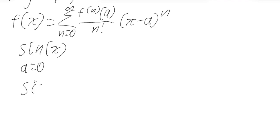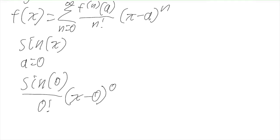So we'll start with the n equals zero term, and this term will be sine of zero over zero factorial times (x minus zero) to the zero. So basically sine of zero is just zero, so this entire term will equal zero and we can ignore it.